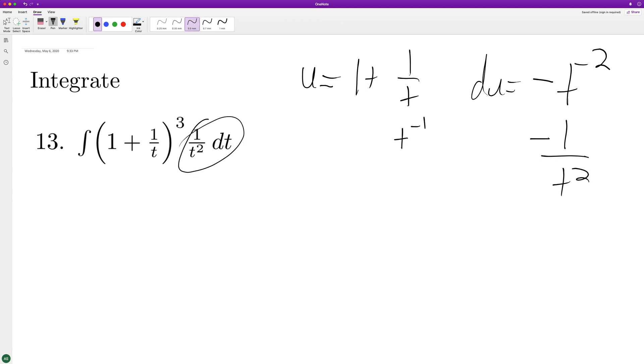The only difference here is to get du equal to dt, we need to multiply by negative 1, so we get negative 1 out in front, and we integrate, and we have u cubed du. So we have negative u raised to the 4th over 4 plus c.